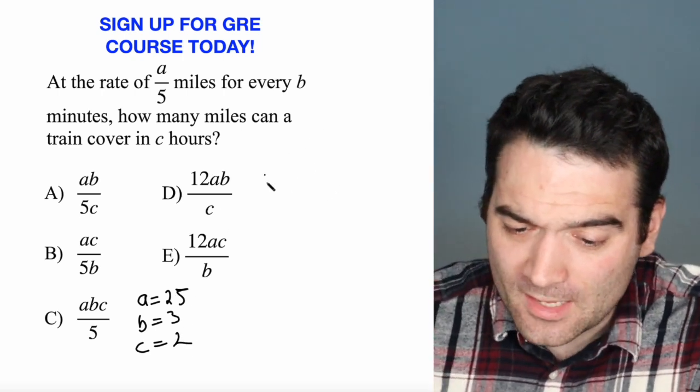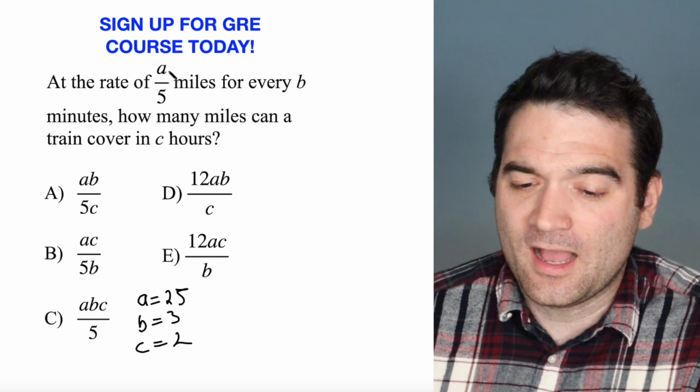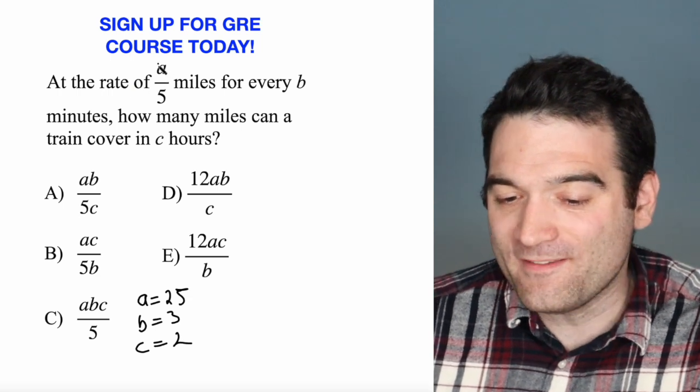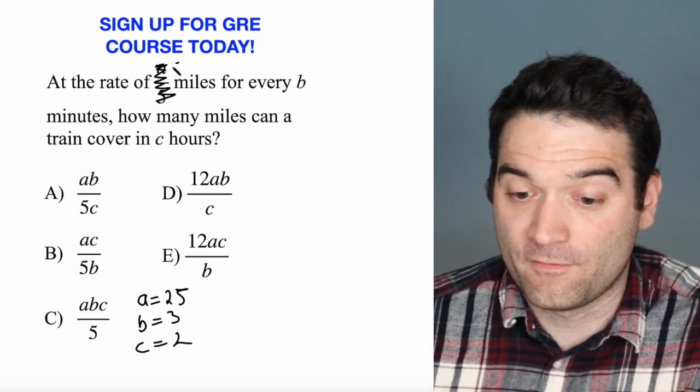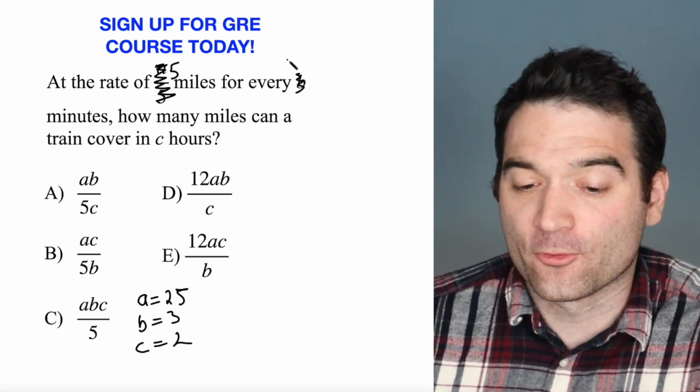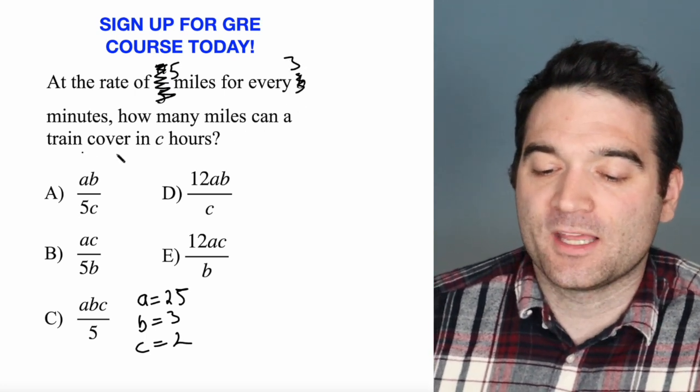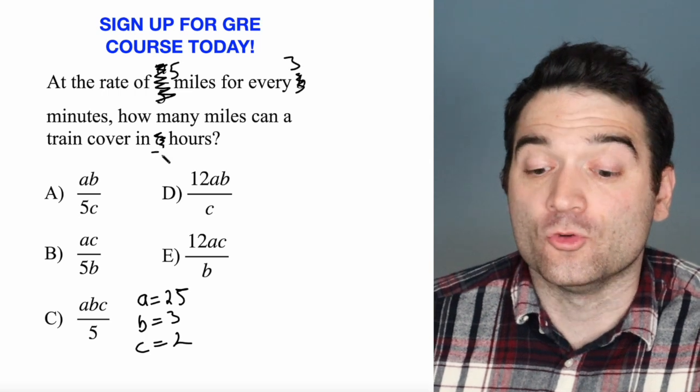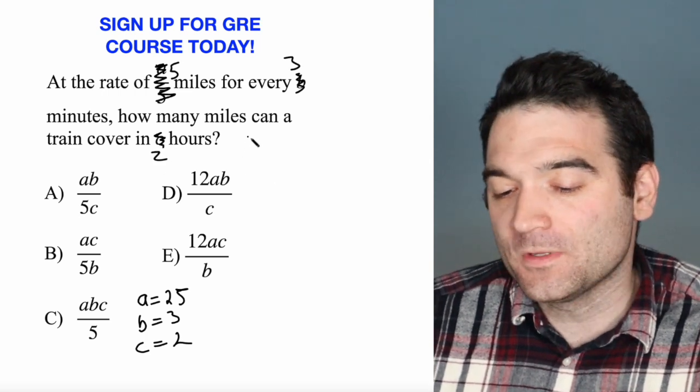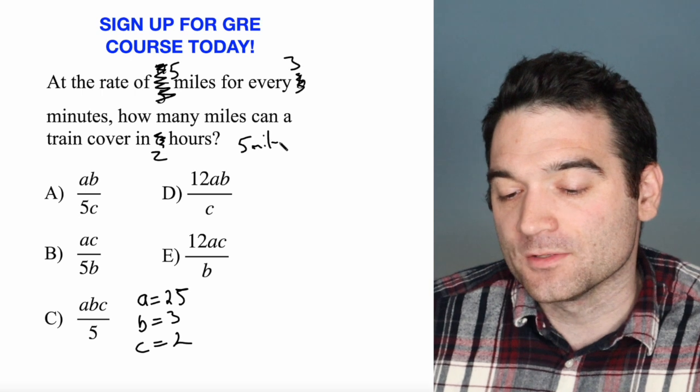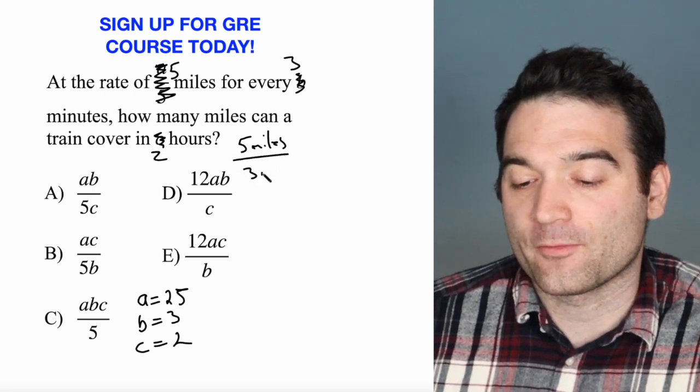So let's take a look at this. At the rate of A over 5, so that's 25 over 5, or 5 miles, for every 3 minutes, how many miles can a train cover in 2 hours? Well, I'm told here that 5 miles get covered in 3 minutes.